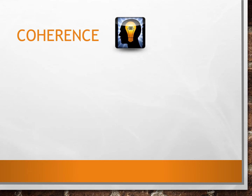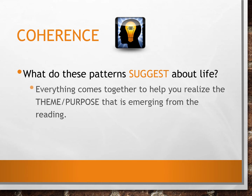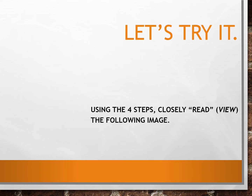The fourth step is to create a coherence. This is where you apply meaning to the text and really look at what the patterns you've noticed suggest about life. Everything comes together here — focus on what is the theme or the author's purpose of the reading, image, or film. An inferential conclusion that leads you to the formation of a thesis for the writing process is your goal — really figure out what the author is trying to tell you.